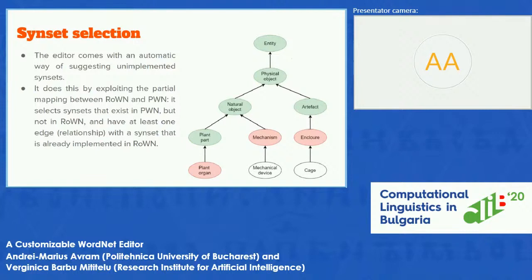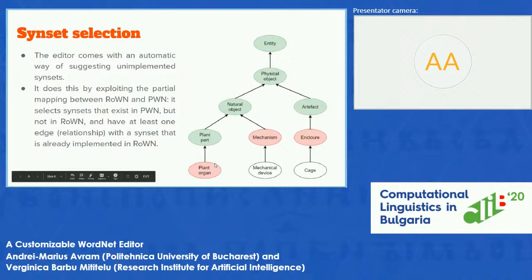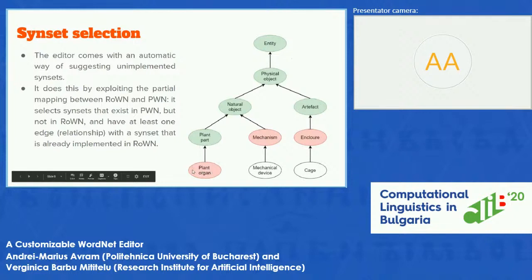The editor has an automatic way of suggesting unimplemented synsets. It exploits the partial mapping between the Romanian WordNet and the Princeton WordNet — it selects the synsets that exist in Princeton but not in the Romanian WordNet and have at least one edge with a synset that is already implemented in the Romanian WordNet. In this graph, the green nodes are the common synsets between the Romanian and Princeton WordNets, and the red nodes are the synsets not implemented in the Romanian WordNet but implemented in Princeton and having at least one edge with an already implemented Romanian synset. These red nodes will be the ones suggested by the application.